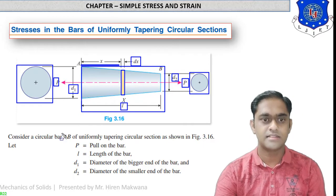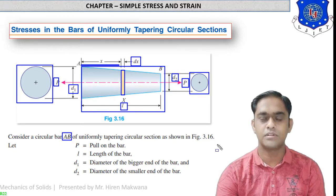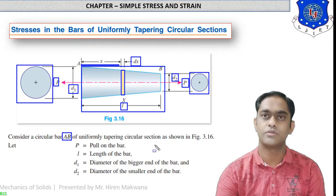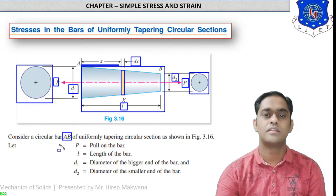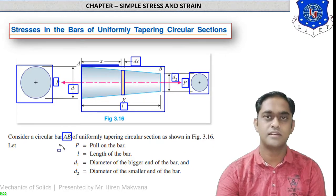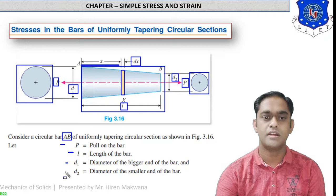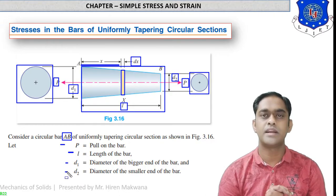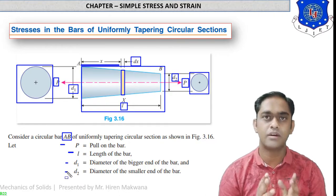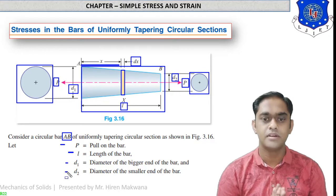Let us consider a circular bar AB of uniformly tapering circular section as shown in the figure. The notations are: P is the pull on the bar, L is the length of the bar, D1 is the diameter of the bigger end, and D2 is the diameter of the smaller end of the bar.